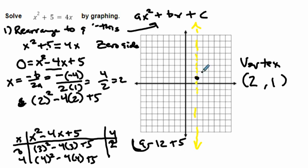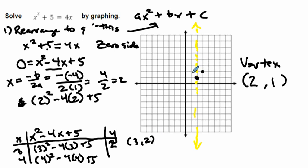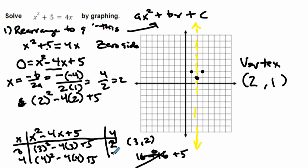I go over to 3 and up to 2 to plot that point. Remember, it's your x-coordinate and y-coordinate after plugging in. Because parabolas are symmetric, I reflect this point over the axis of symmetry to get a third point. For x equals 4: 4 squared is 4 times 4 — 16 — minus 4 times 4, which is also 16, plus 5. That gives 16 minus 16 plus 5 equals 5.